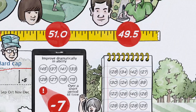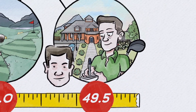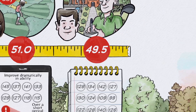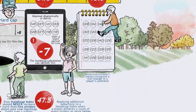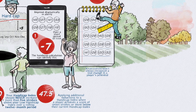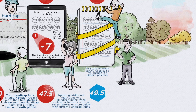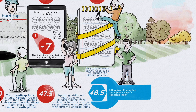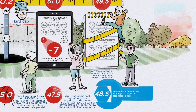A calculation won't always detect a real change in a player's ability. For that reason, each golf club's handicap committee has the tools and can adjust a player's handicap index to better reflect their current ability.